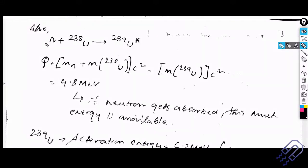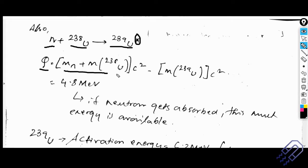Now, what happens with uranium-238? We have uranium-238 bombarded by a neutron, producing uranium-239 in the excited state. If we calculate the Q-value for this reaction, the result is approximately 4.8 MeV. Remember for your exam: you may be asked to find the Q-value for the reaction where a neutron hits uranium-238. For explaining why uranium-235 is more suitable for a nuclear reactor than uranium-238, this lecture gives the key reasoning.